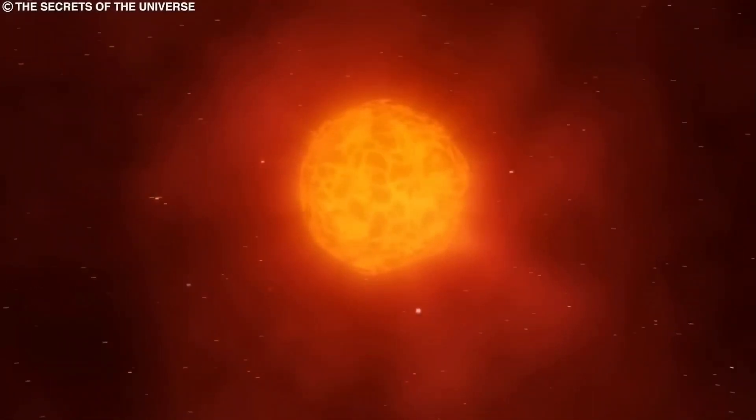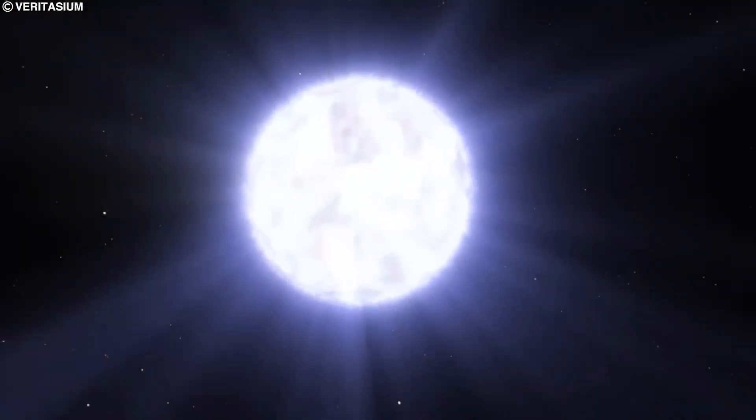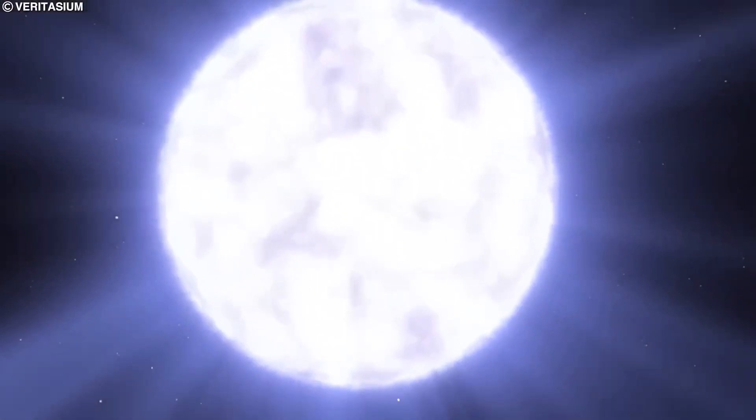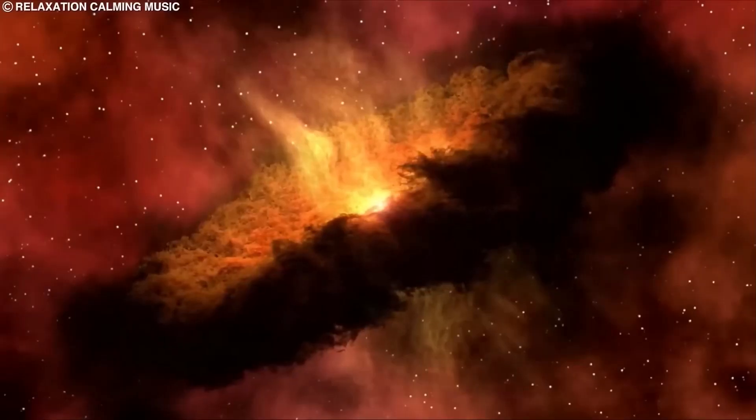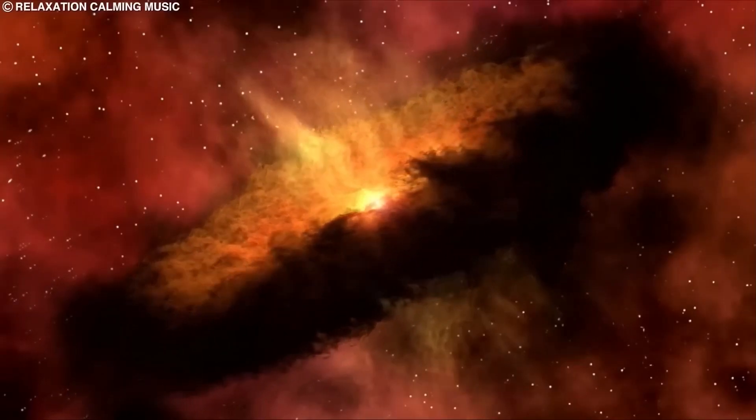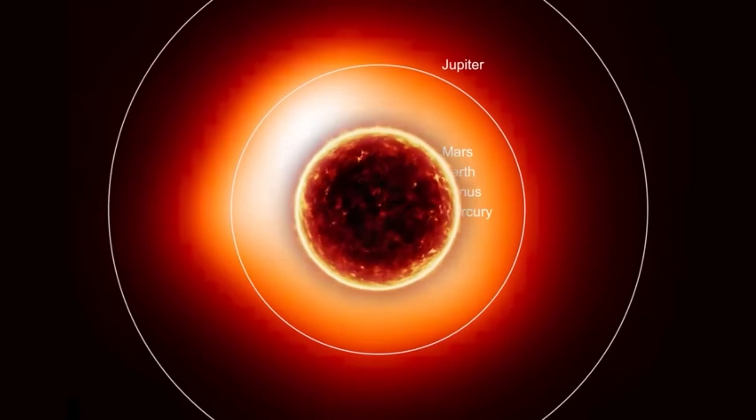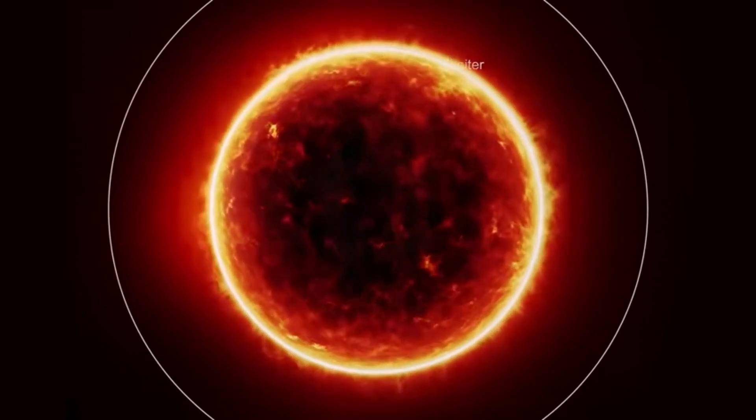However, Sio and his colleagues believe this could be an underestimate. If the 2,200-day cycle is the main one and all the others are overtones, then the star would be even more massive, spanning 1,200 times the size of our Sun, even wider than Jupiter's orbit.